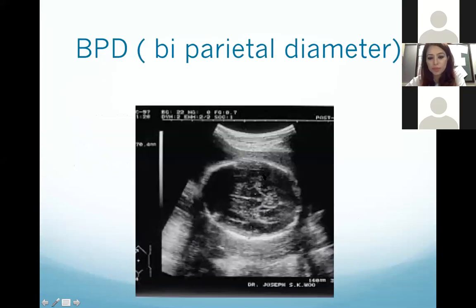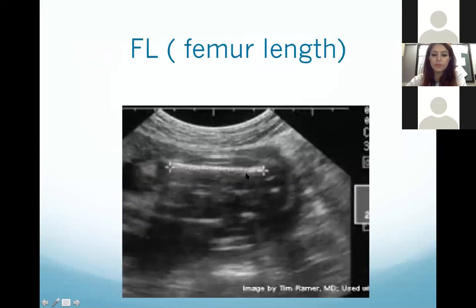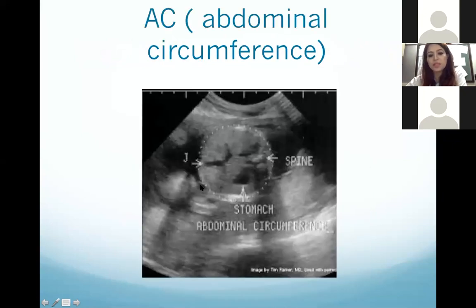The BPD is measured across the fetal head between the two parietal bones — you can see the frontal bone, parietal bones, and occipital bone. The femur length is taken from end to end. The abdominal circumference is measured all around the circumference of the abdomen; on that view you can see the stomach, spine, and liver.